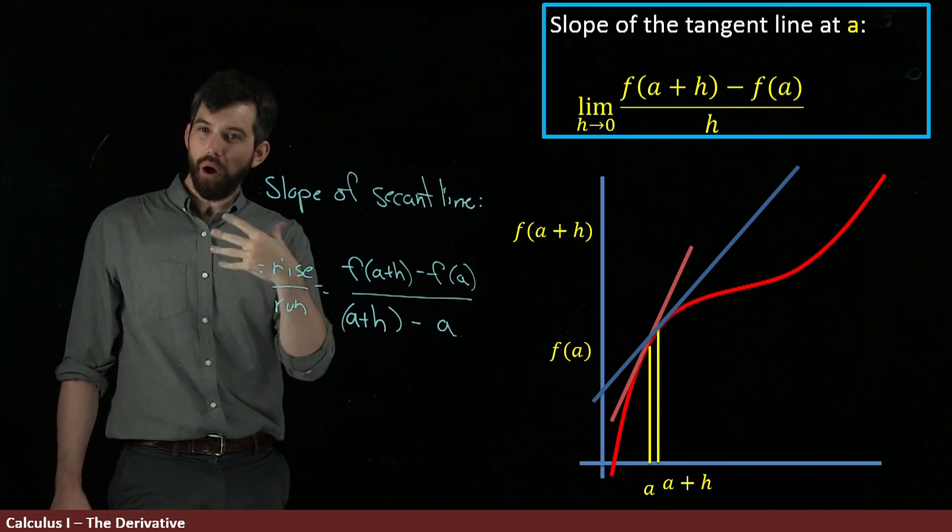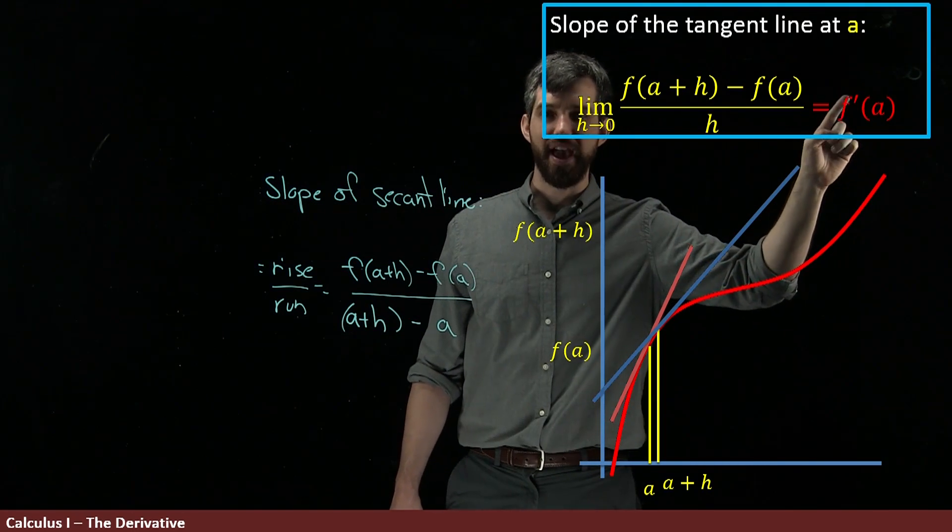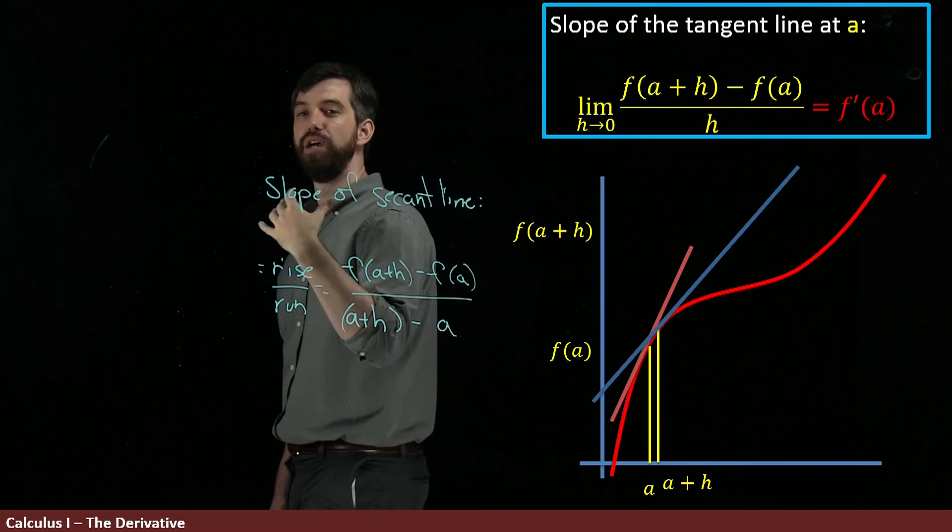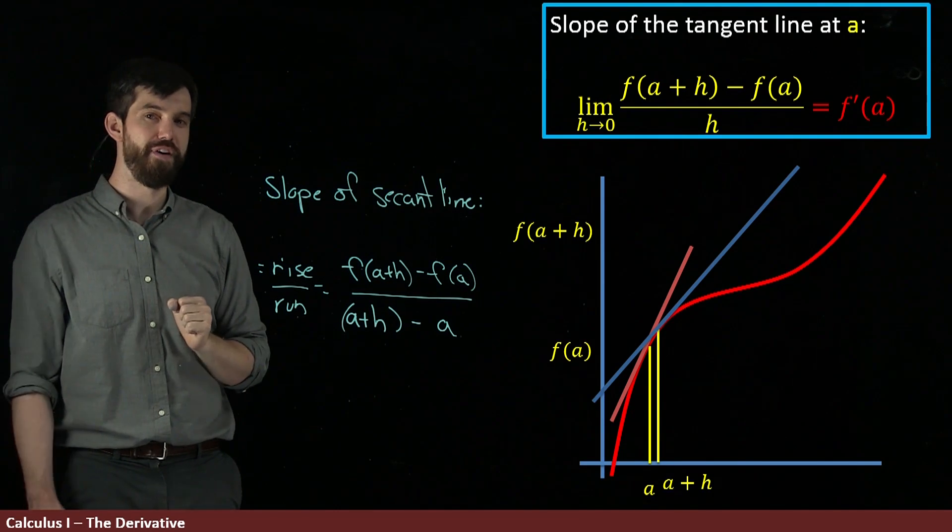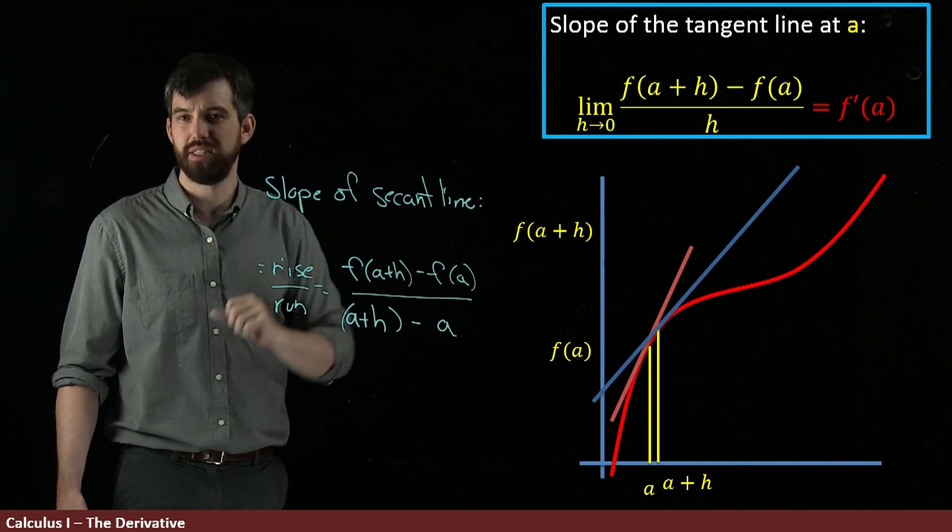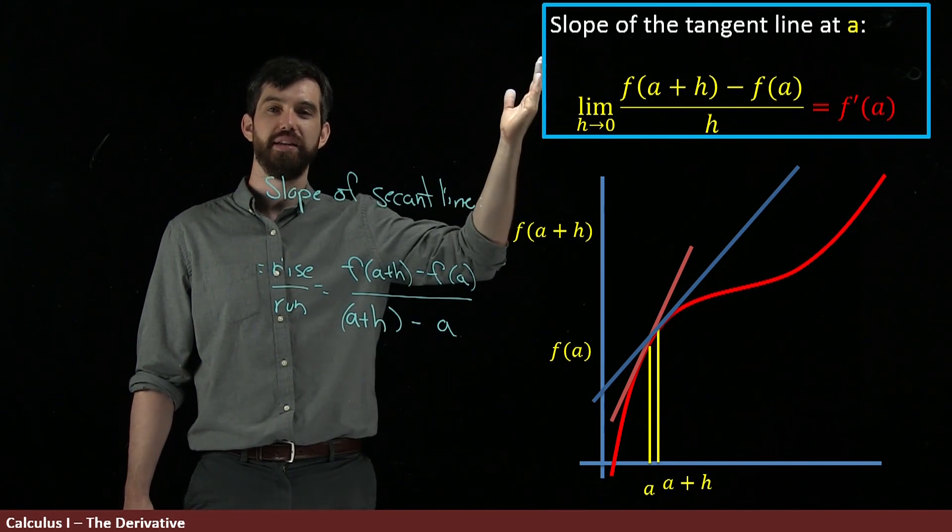And we also use a different terminology. We write f prime of a, where we put this little prime up. That is the derivative. f prime of a is the derivative at the value of a. And geometrically, it means the slope of the tangent line. And algebraically, it's whatever this limit is.